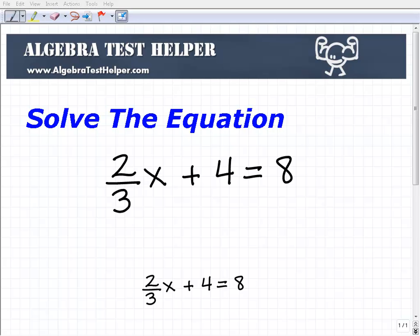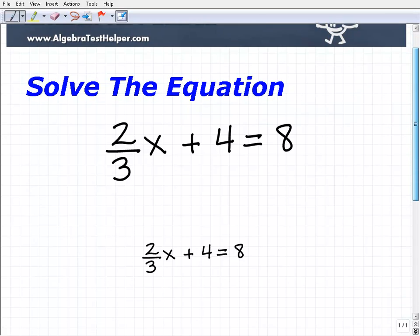Okay, so let's go ahead and solve the equation two-thirds x plus 4 equals 8. We'll do this step by step here.